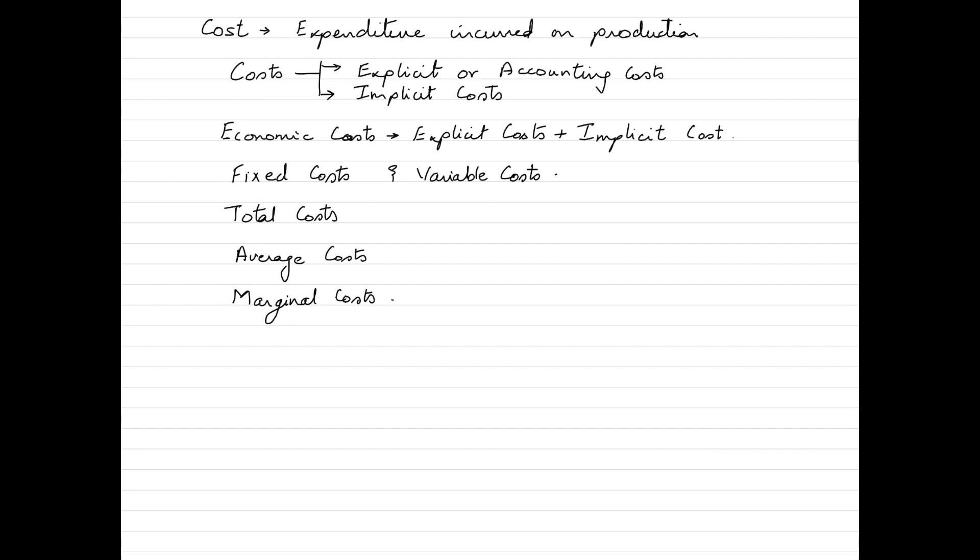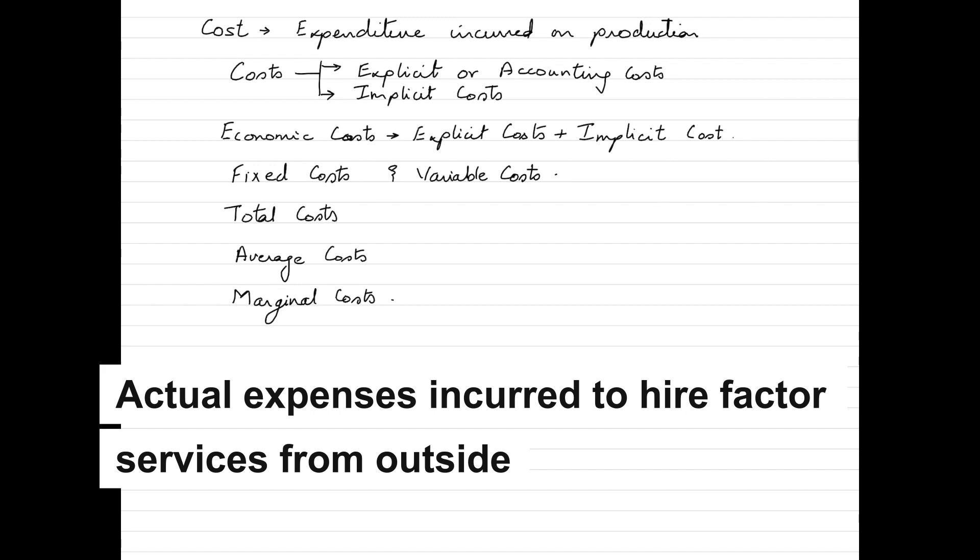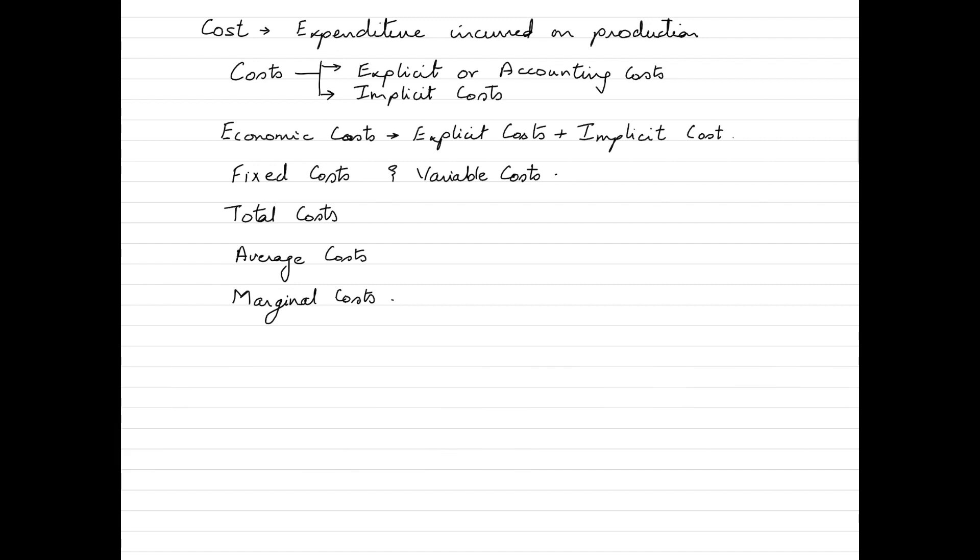When we talk about explicit costs, it is the actual money expenditure that is incurred on inputs or payments that are made to outsiders for hiring factor services. For example, when you pay wages to your employees or when you pay rent for the factory buildings or premises that you hire, all those expenses are paid by the businesses for getting those services. Hence they are called as explicit costs.